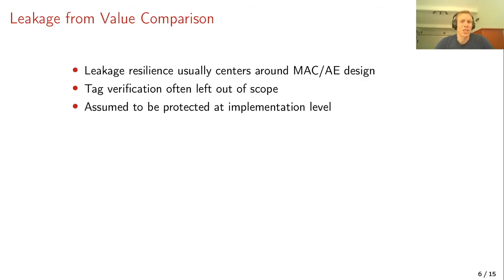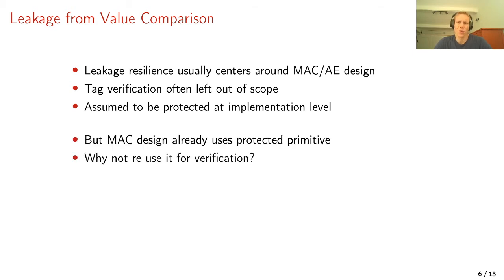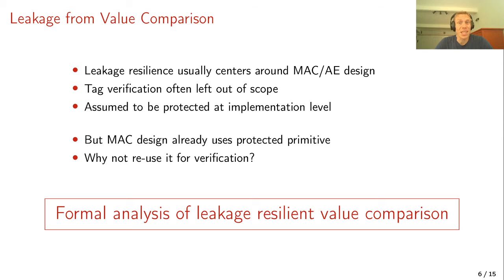More broadly, leakage resilience analysis for MACs and authenticated encryption schemes is usually centered around the scheme design, not the tag verification. Tag verification is simply left out of scope, assumed to be protected at the implementation level. This looks rather odd: as designers we work hard to make an efficient leakage-resilient scheme, but then still need implementation-level protection for tag verification. If the MAC already uses protected primitives, why not reuse those for verification? That is what this work centers around.